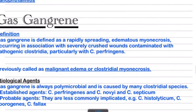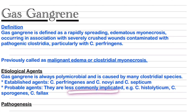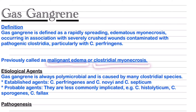The next topic is gas gangrene. It is defined as a rapidly spreading edematous myonecrosis occurring in association with severely crushed wounds contaminated with pathogenic clostridia, particularly Clostridium perfringens. The main etiological agent is Clostridium perfringens. Less commonly implicated agents include Clostridium histolyticum, Clostridium sporogenes, and Clostridium novyi. Gas gangrene is also known as malignant edema and clostridial myonecrosis.